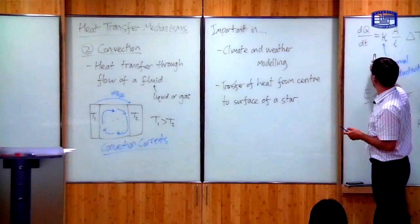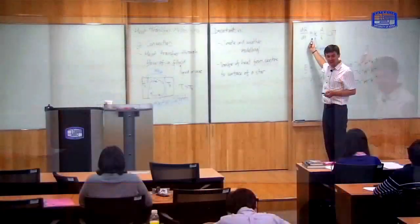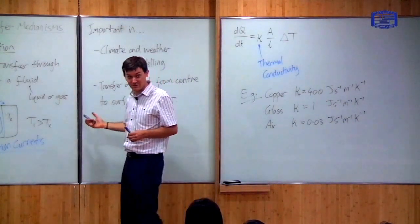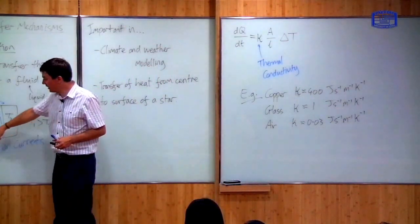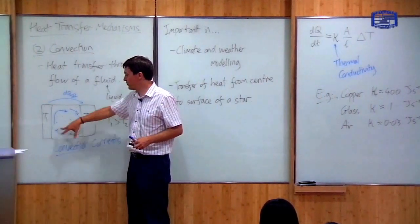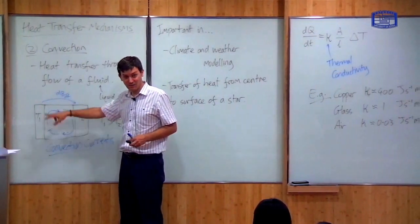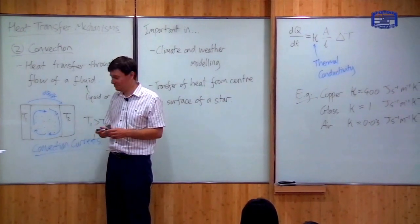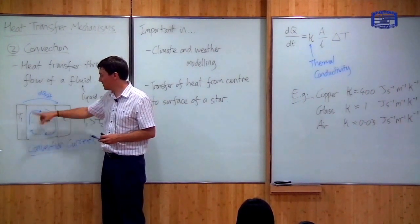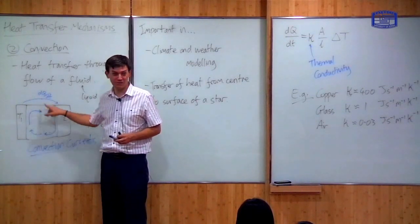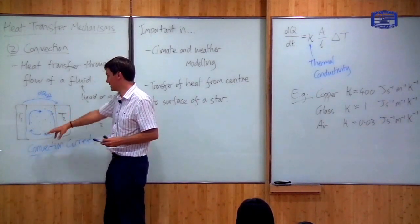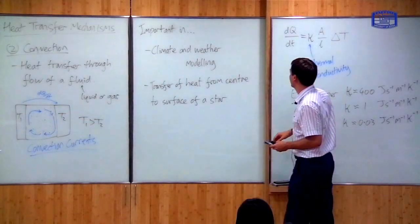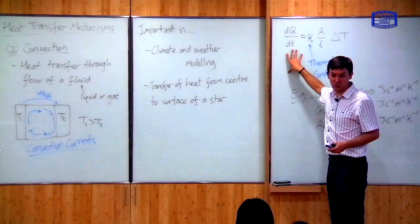Unfortunately, I cannot give you a nice formula for convection like I could for conduction, because convection is a much more complicated process. In order to understand the currents which are set up you need a model of fluid dynamics, which is quite complicated — it can become turbulent and exhibit chaotic motion, making it very difficult to predict.